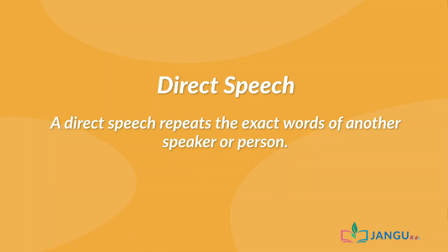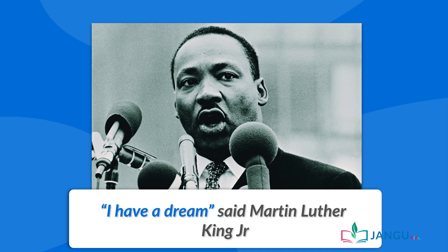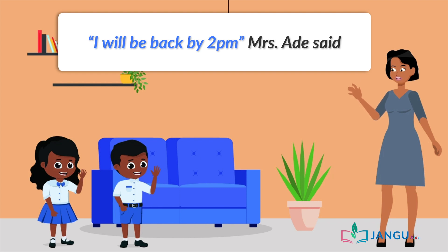A direct speech repeats the exact words of another speaker or person. When writing a direct speech, the exact words of the speaker are put in quotation marks like this. Now, let's take some examples. 1. 'I have a dream,' said Martin Luther King Jr. 2. 'I will be back by 2 p.m.,' Mrs. Ade said. In these examples, the highlighted words are examples of direct speeches because the exact words of the speakers are inserted within quotation marks.